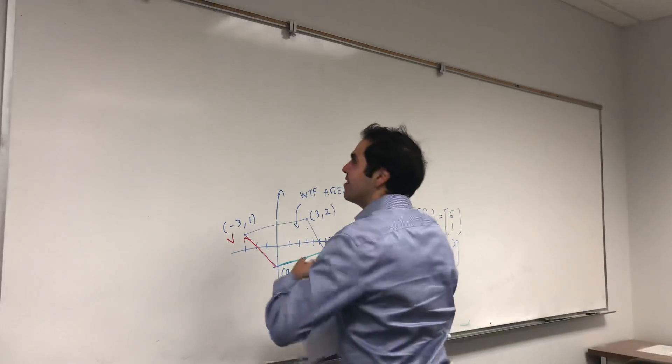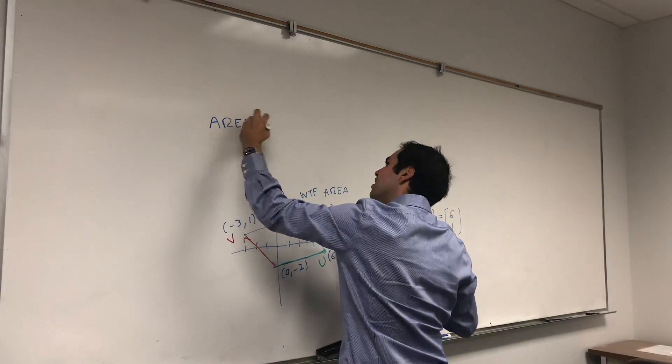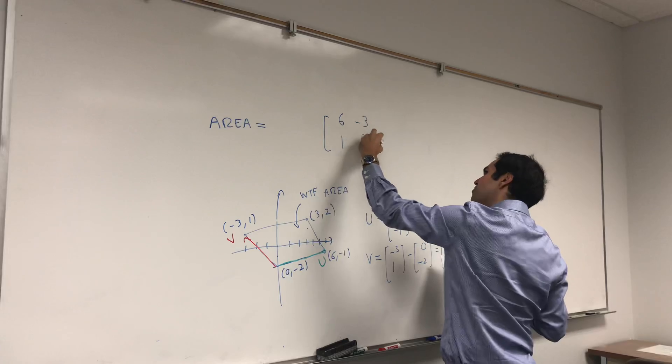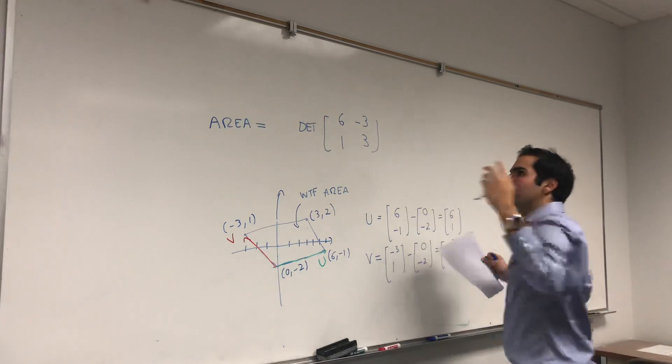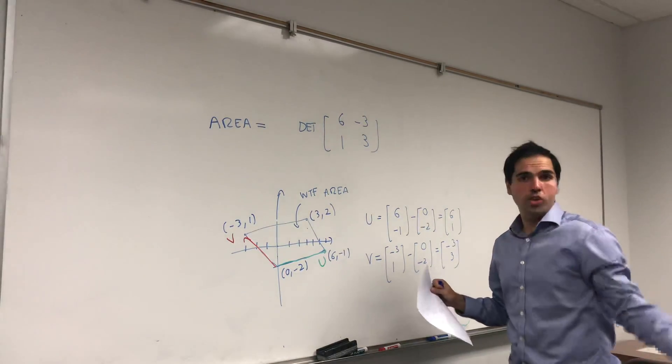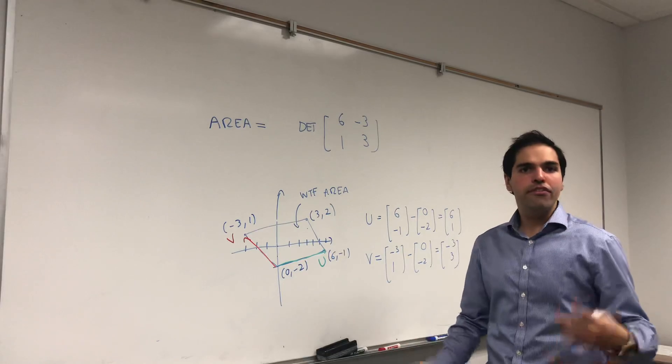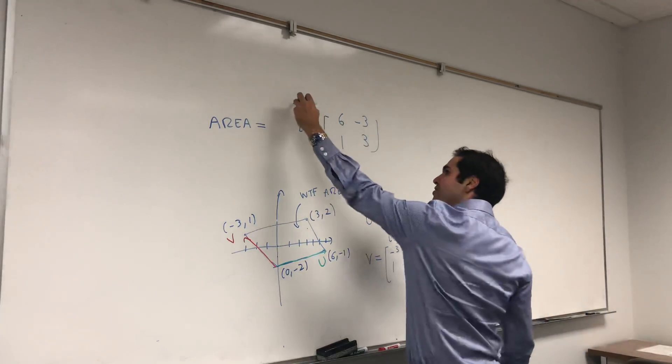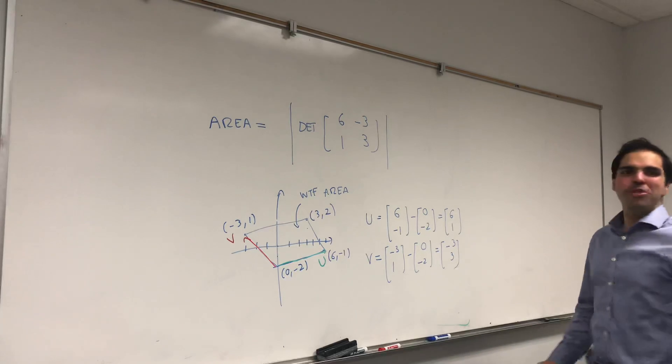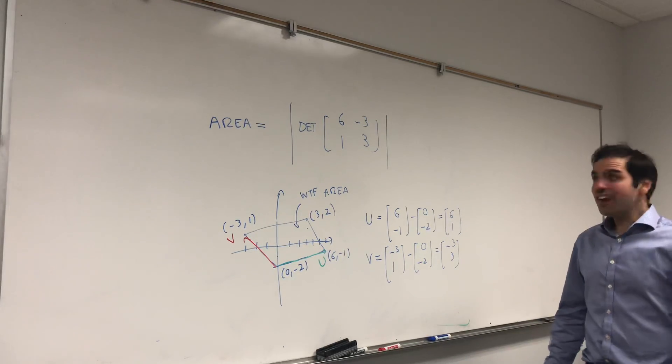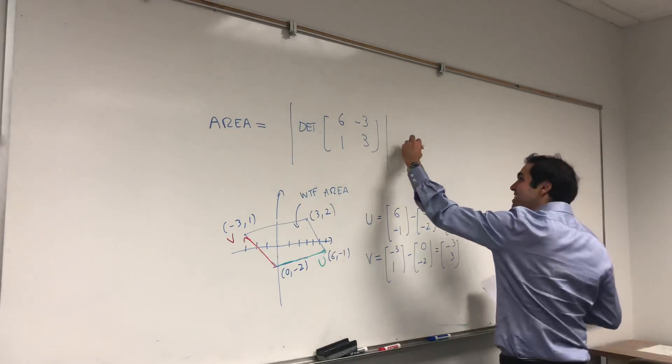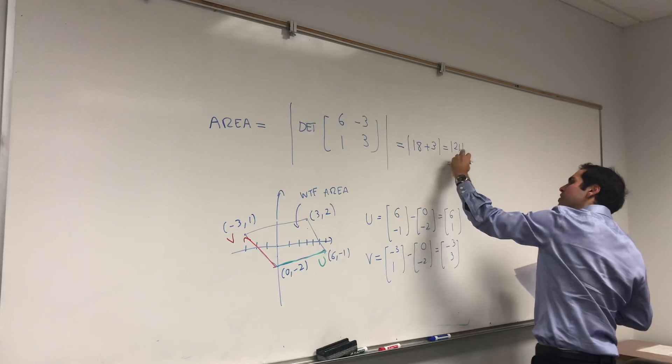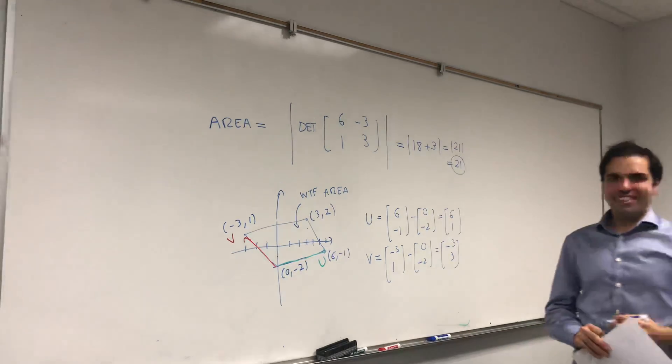What is the area? Well, you have those two vectors, put them in a matrix. So six one minus three three. And take the determinant. Now, it turns out sometimes the determinant could be negative, and that would give you, if you like, the oriented area. But if you really want a positive answer, just make it positive. So just take absolute value of the determinant of that matrix and it gives you the answer. And you're like, oh my god, that's it? Yes, that is it. So if you calculate this, it's 18 plus 3, an absolute value of 21, which is 21. Yep, that's it.